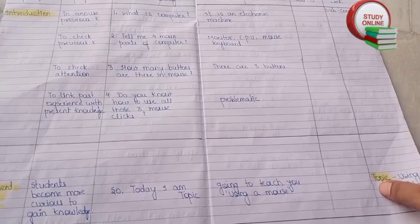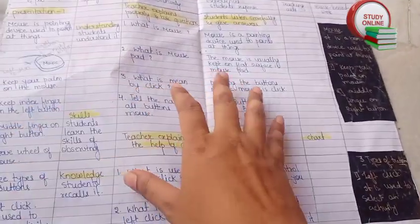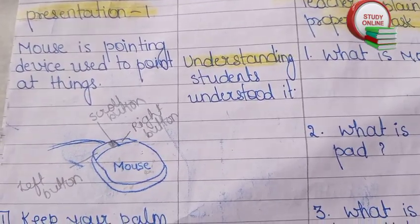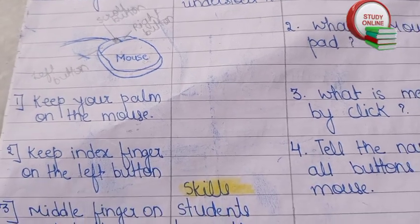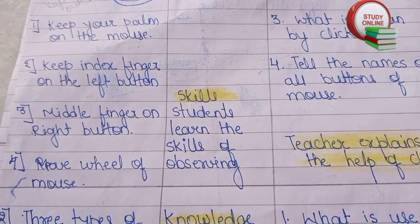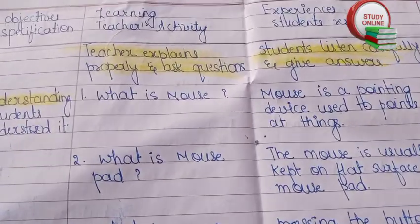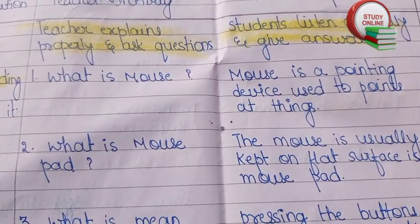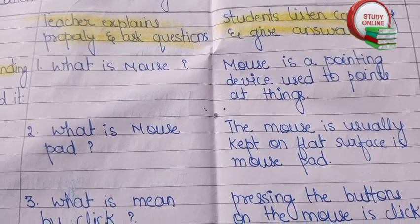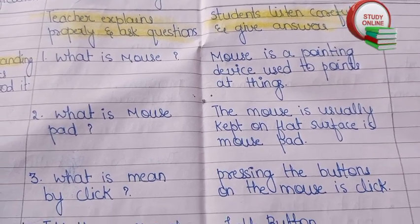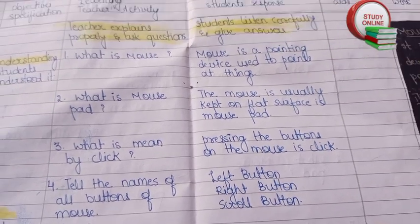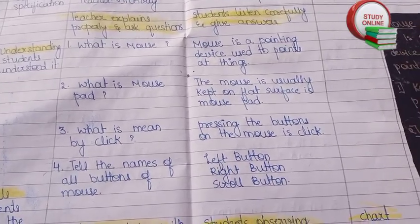Now let's see the presentation part. In Presentation One, we have to teach students about the mouse. Here you can see a diagram — we can also draw a diagram. There are key points we have to cover while teaching about the mouse. We also need to ask three to four questions: what is a mouse? what is a mouse pad? what is meant by click? and what are the names of all the buttons on a mouse?